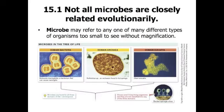The word microbe means small life. It is a descriptive but sloppy name because we could apply the label microbe to any one of the many different types of organisms too small to see without magnification. It is hard to generalize about microbes — they are grouped together simply because they are small, not because they all share a recent common ancestor. In fact, microbes occur in all three domains of life: bacteria, archaea, and eukarya.